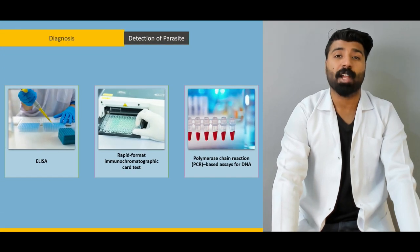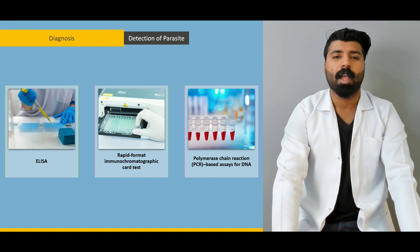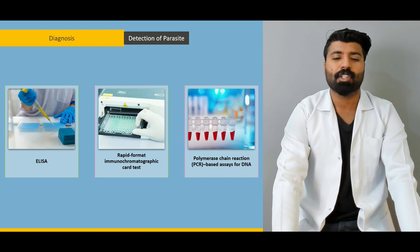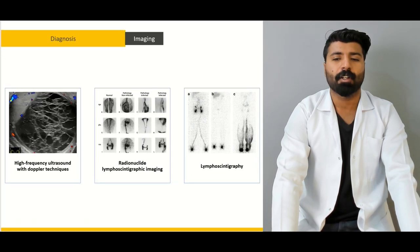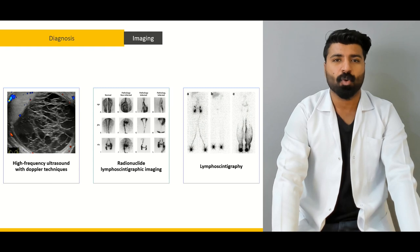Next, we're going to talk about the diagnosis. We'll discuss what points in history are most important to ask from the patient who is suffering, and we'll talk about the physical examination points. Then we're going to talk about the detection of the parasites — techniques which involve ELISA, rapid format immunochromatographic testing, and PCR testing. Further on, we'll cover imaging modalities including high-frequency ultrasound and lymphoscintigraphy.